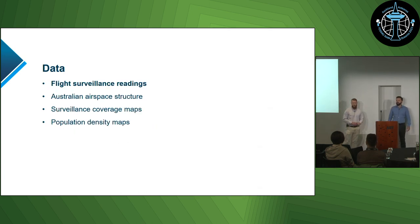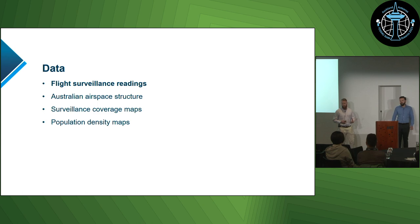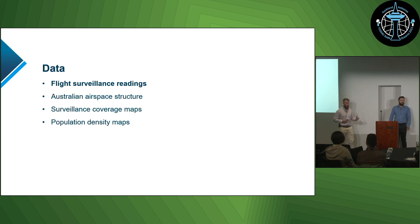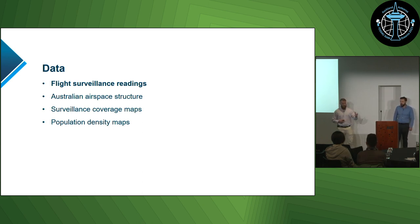What kind of data do we use to support these assessments? It depends a little on the type of assessment, but overwhelmingly our most important data set is our flight surveillance records. This represents data for all flights which take place within Australia. On a five-second interval, we receive identifying details for the flight and aircraft, locational information — longitude, latitude and altitude — as well as avionics information like speed and heading.